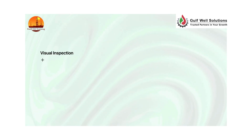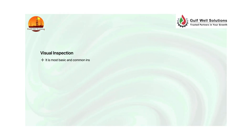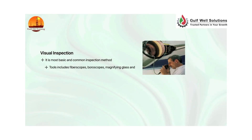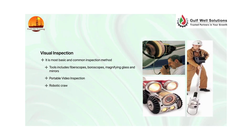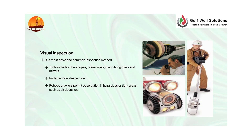Visual inspection is the most basic and common inspection method. Tools include fiberscopes, boroscopes, magnifying glass and mirrors, and portable video inspection units. Robotic crawlers permit observation in hazardous or tight areas such as air ducts, reactors, and pipelines.